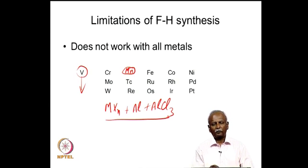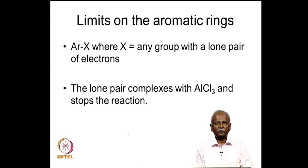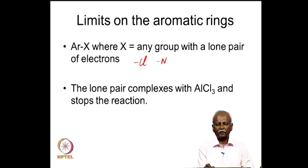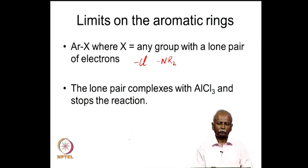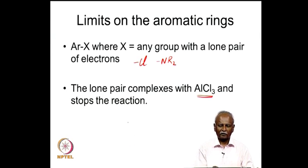Apart from limitations on the metal, there are also limitations on the type of aromatic rings that can be used for making the metallocene complexes. Whenever there is a substituent on the aromatic ring with a lone pair, it tends to coordinate to the aluminum, and it stops AlCl3 from functioning. As a result, you cannot use aromatic compounds which have lone pairs of electrons. That means the chloro group and the NR2 groups cannot be used as substituents - any halogen or any amine will make the aromatic ring inactive. The reason for this is the coordination of such groups to AlCl3.